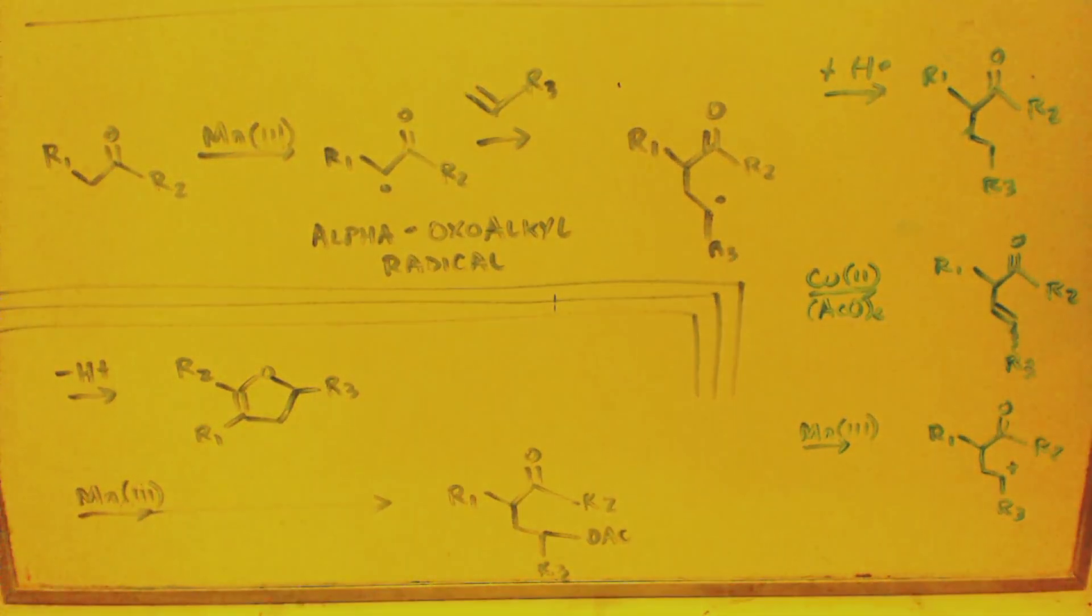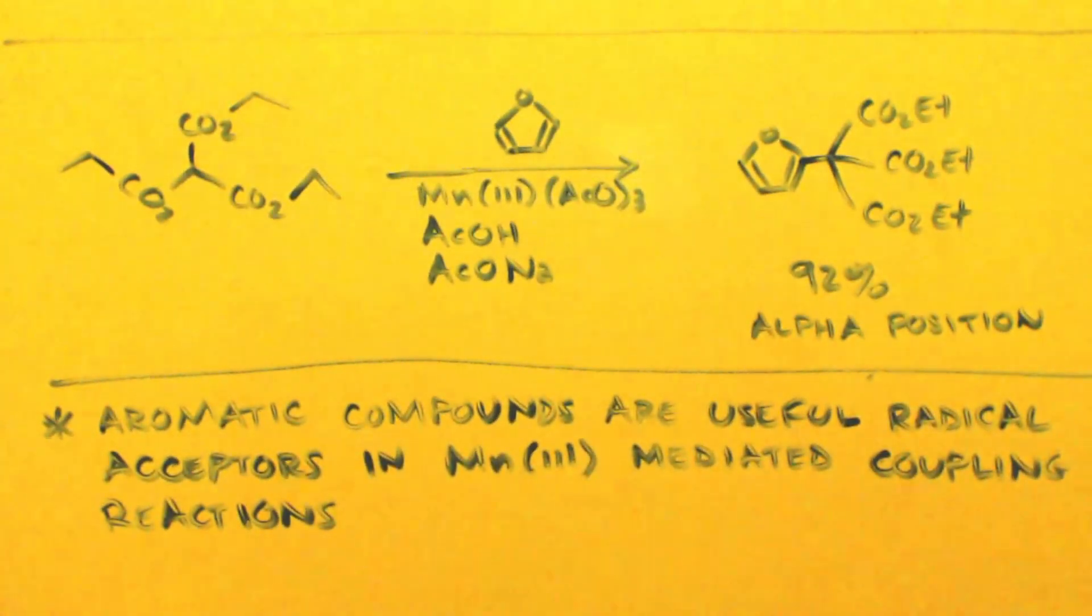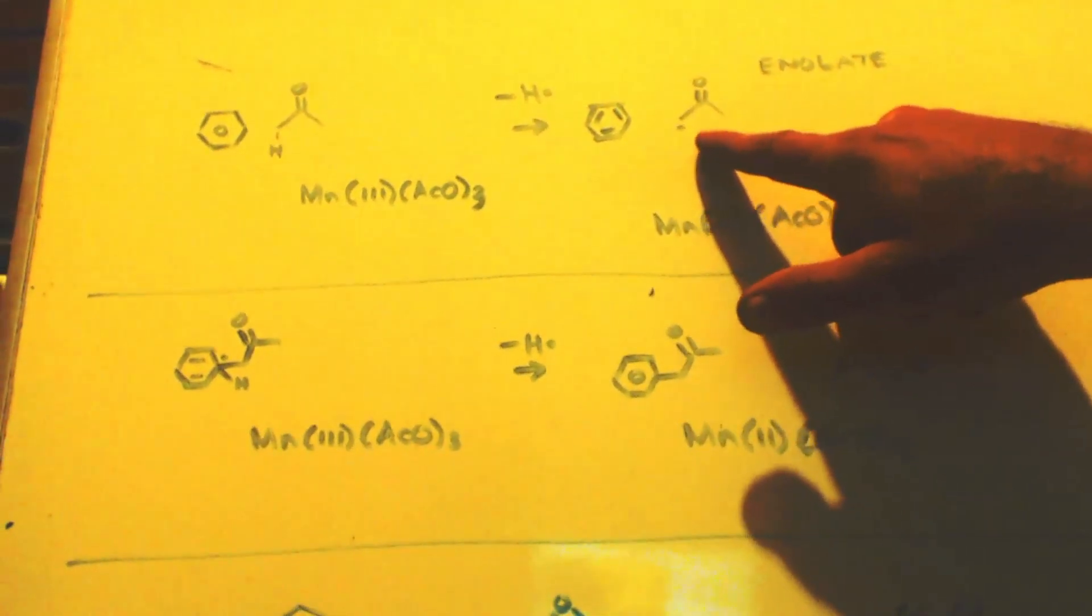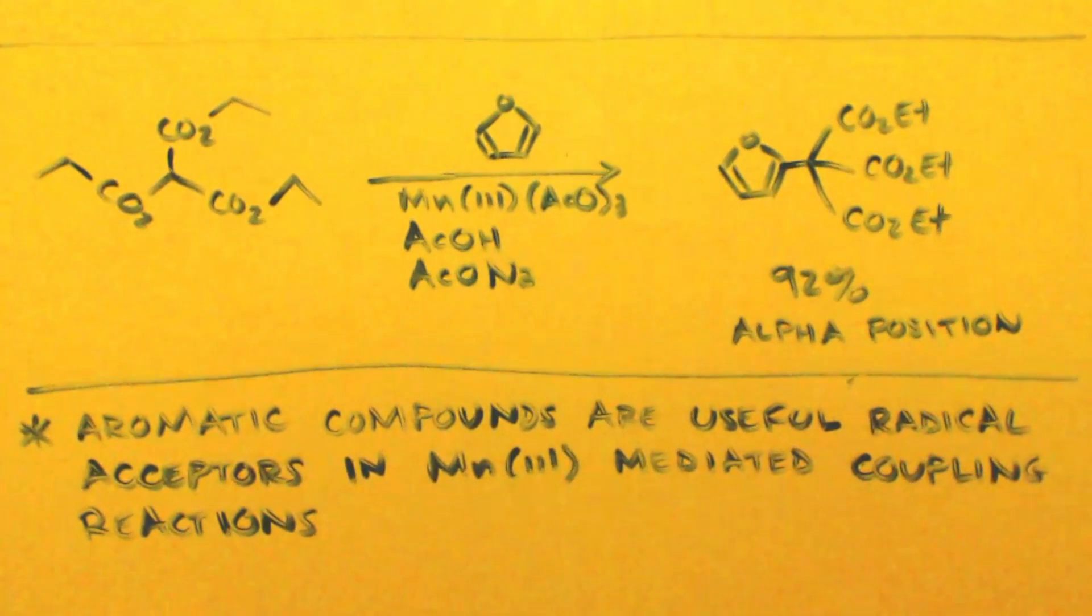Now remember how I said in the one reaction, that it makes a type of an enolate, free radical. So this reaction works on enolizable carbonyl compounds really well. I just wanted to bring that up, but here's another example of why I think this reaction will work on benzene. Here in Wikipedia it says aromatic compounds are useful free radical acceptors in MAN3-mediated coupling reactions.